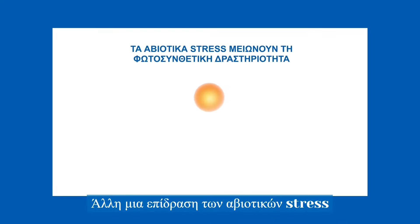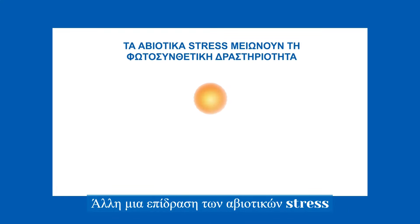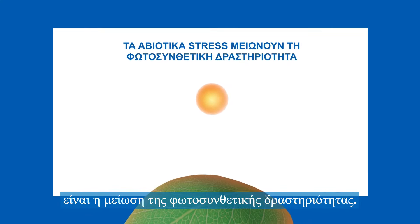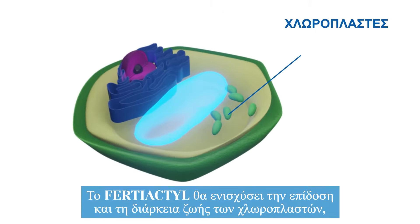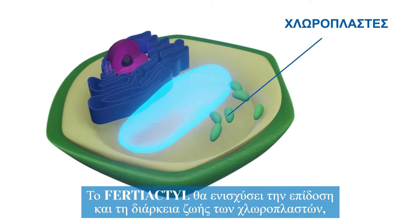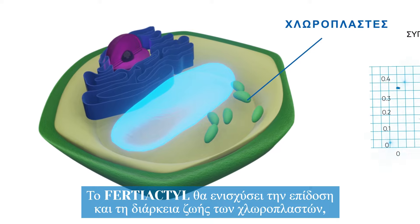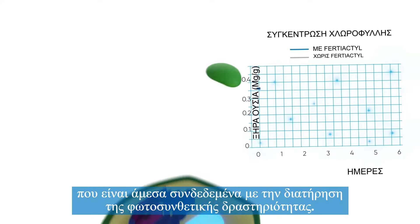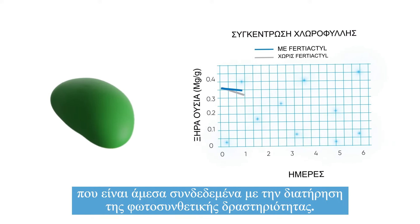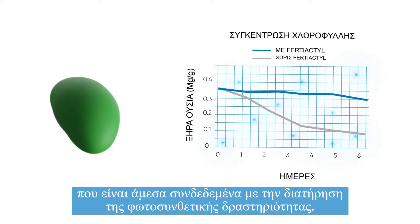Another impact of abiotic stresses is the reduction of photosynthetic activity. Fertiactyl will boost the performance and lifespan of the chloroplasts, which are directly involved in maintaining photosynthetic activity.